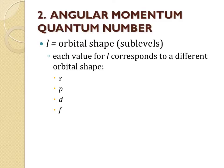The second quantum number is the angular momentum quantum number. This tells us our orbital shape. You can also refer to these as sub-levels. Each value for L will correspond to a different shape. We're not going to be very concerned about the actual values for L, just the shapes. There are four: S, P, D, and F.